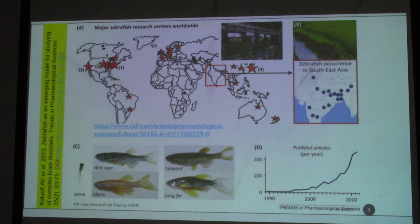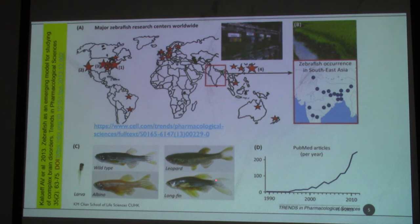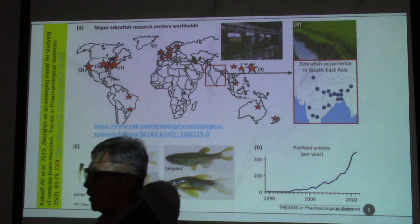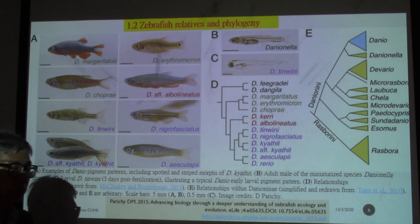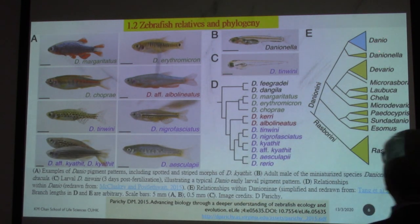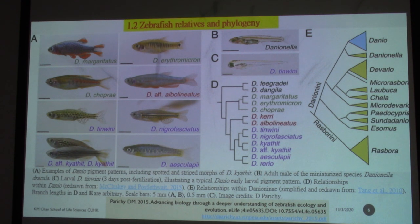These albino fish are all the same genus and species, Danio rerio. We can also find some with a leopard pattern — dots showing on the body — and also a long-fin variant with elongated fins and tails. These are the many different variants found in the wild. If you look at this genus, you may compare it with other related genera, such as Danio and Danio aesculapii, and Danio rerio would be in this group of close relatives.